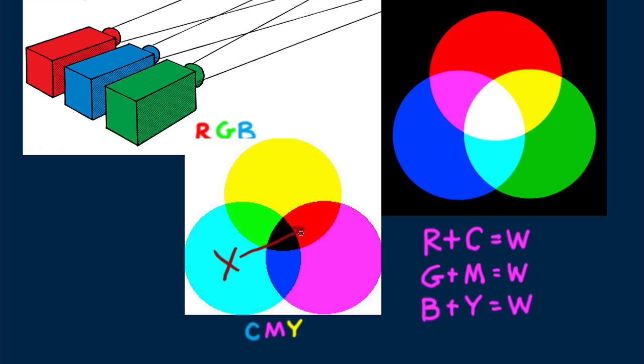Something painted blue absorbs yellow and so reflects all the colors except yellow. Take yellow away from white, and you've got blue. Subtract magenta from white light, and you've got green.